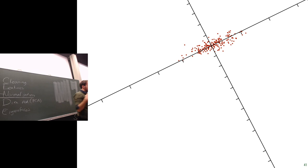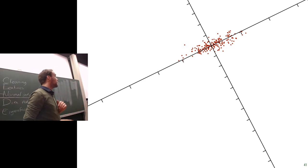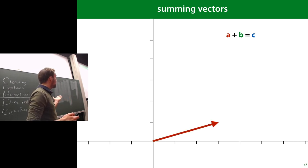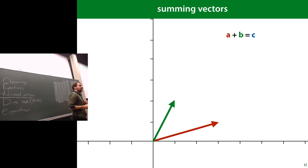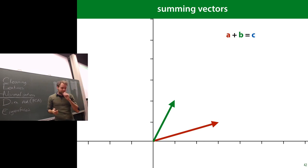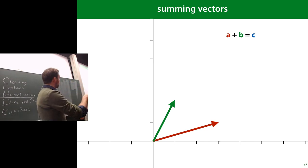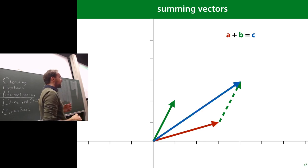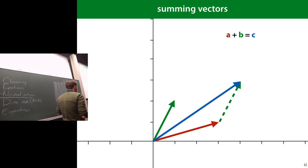First, remember that if you sum two vectors a and b, you sum their independent elements. Visually: take the bottom end of one vector and stick it on the top end of the other, then draw a line from the origin to the resulting tip. That's your sum. Now, about bases: our standard Cartesian coordinate system is made up of two special unit vectors — (1,0) and (0,1) — and every point is a linear combination of those.